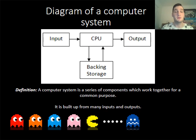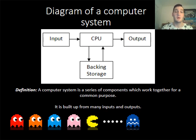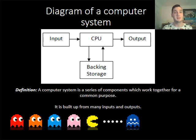Here is a diagram of a computer system. You are going to need this diagram when you go to produce a poster or a document that explains what a computer system is. The definition of a computer system is a series of components that work together for a common purpose. Generally they include an input, the CPU in the middle, and the output, and there is also backing storage. For example, an input might be typing on the keyboard, then the processor translates that information and outputs it to the screen.